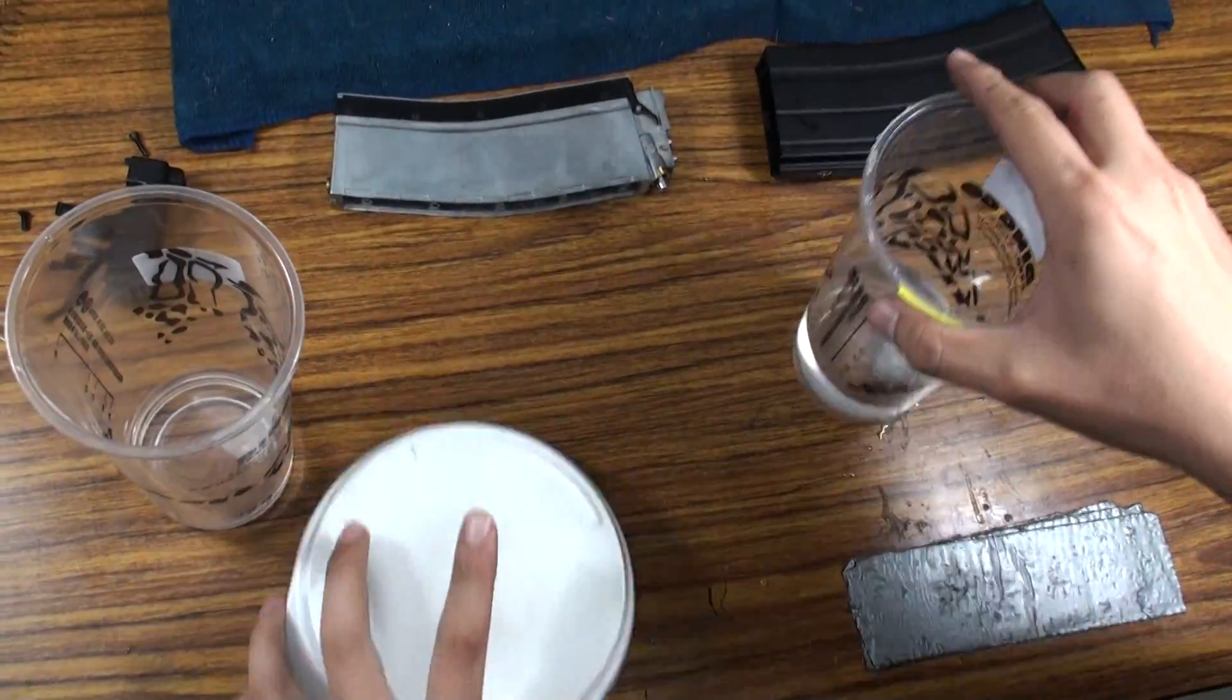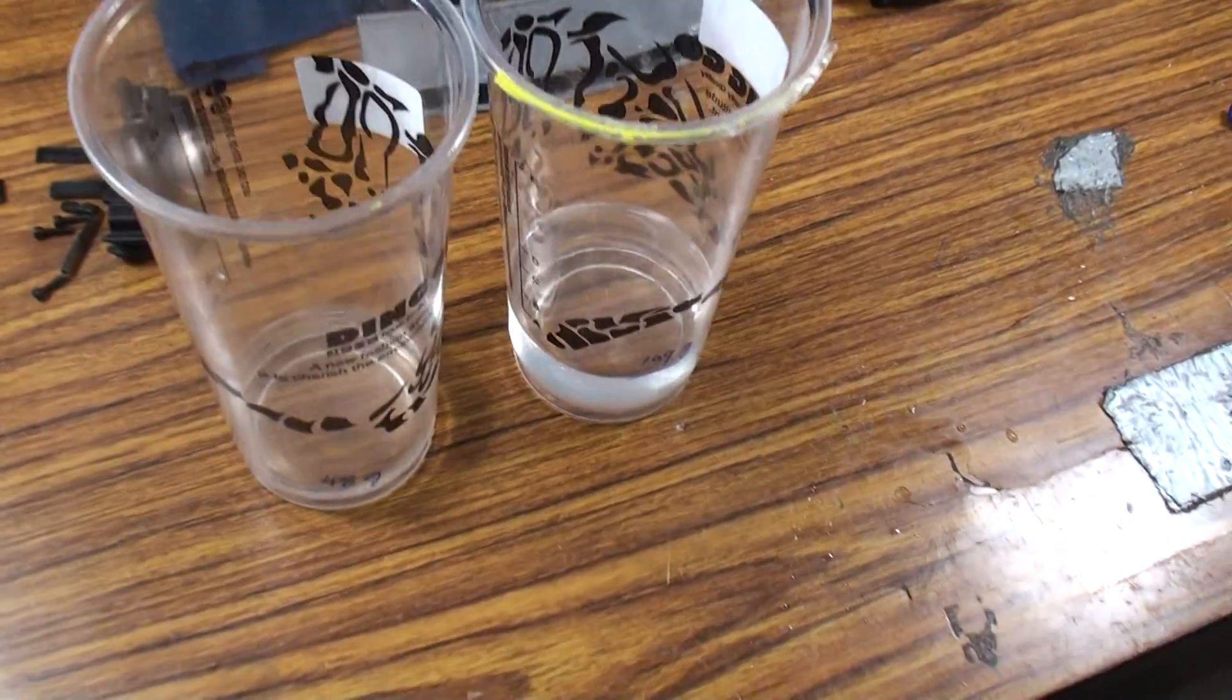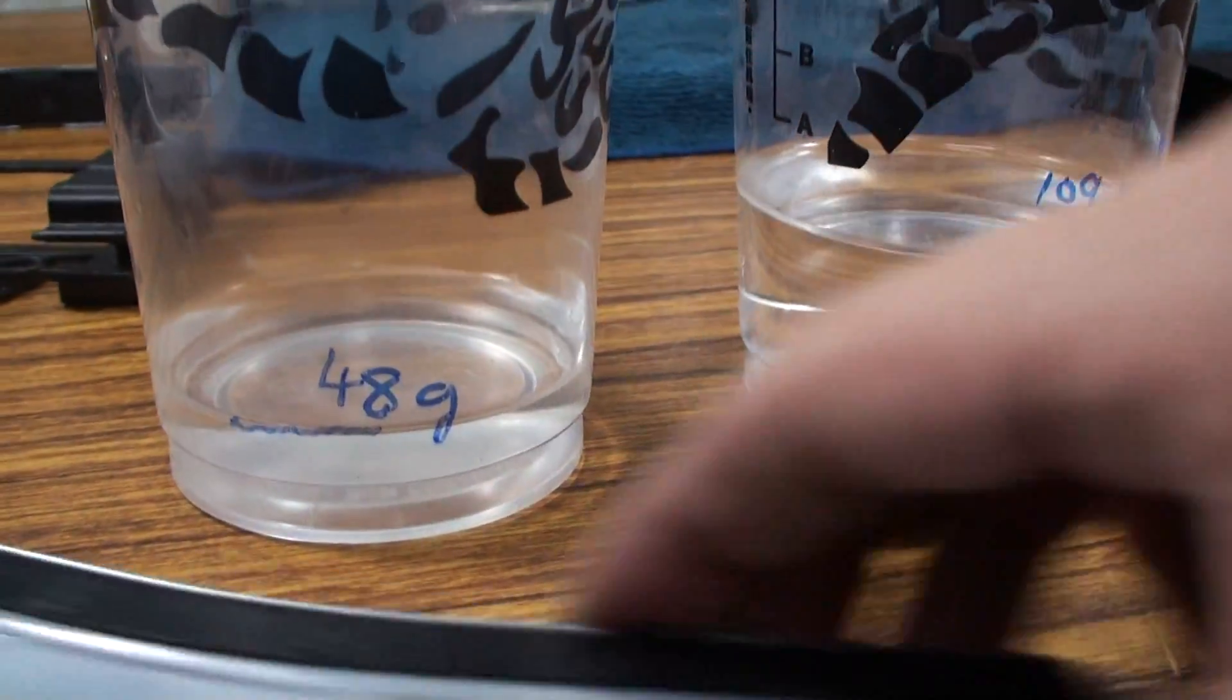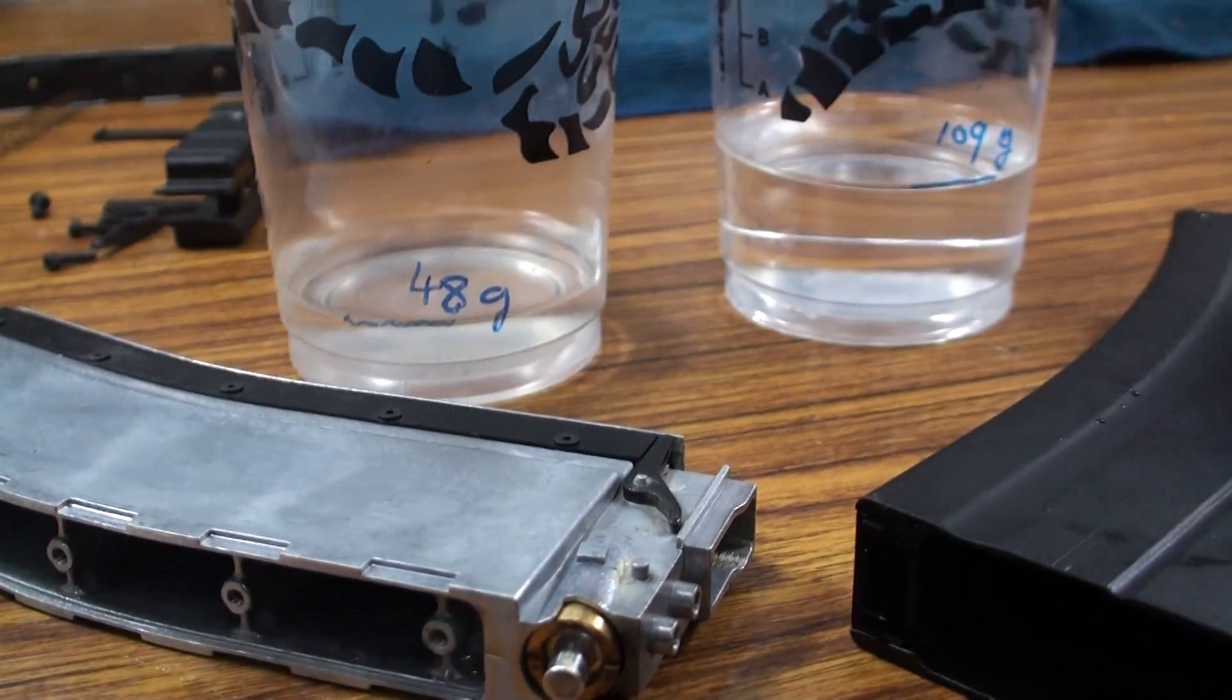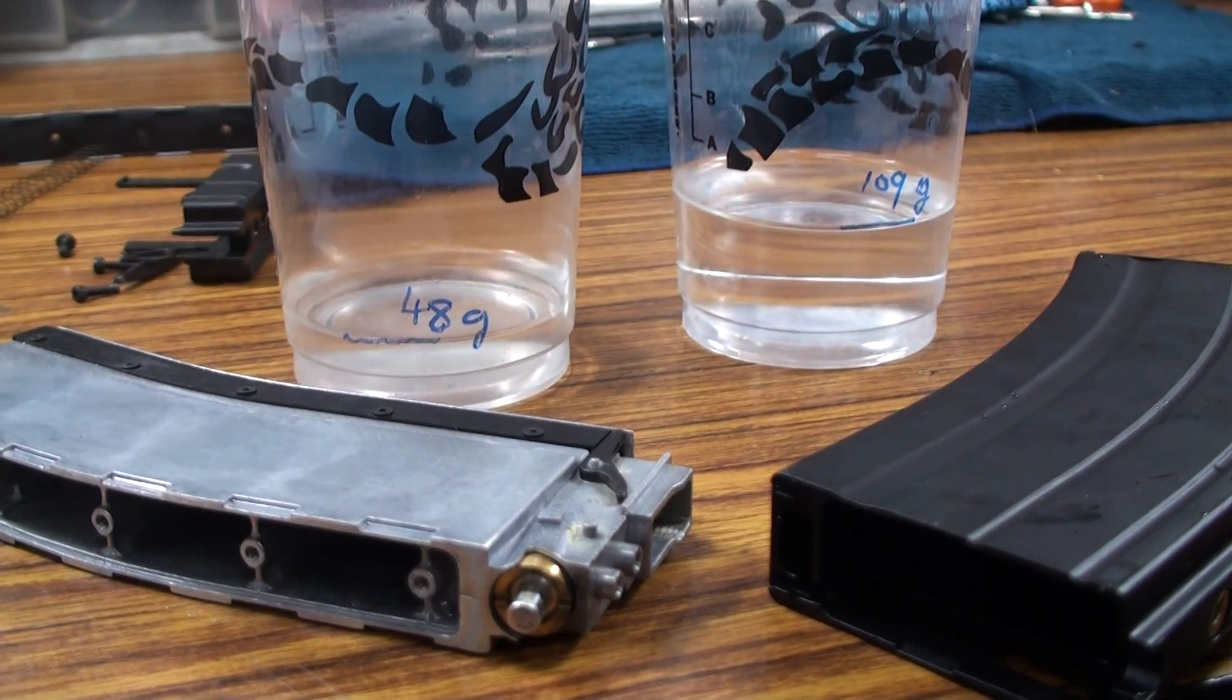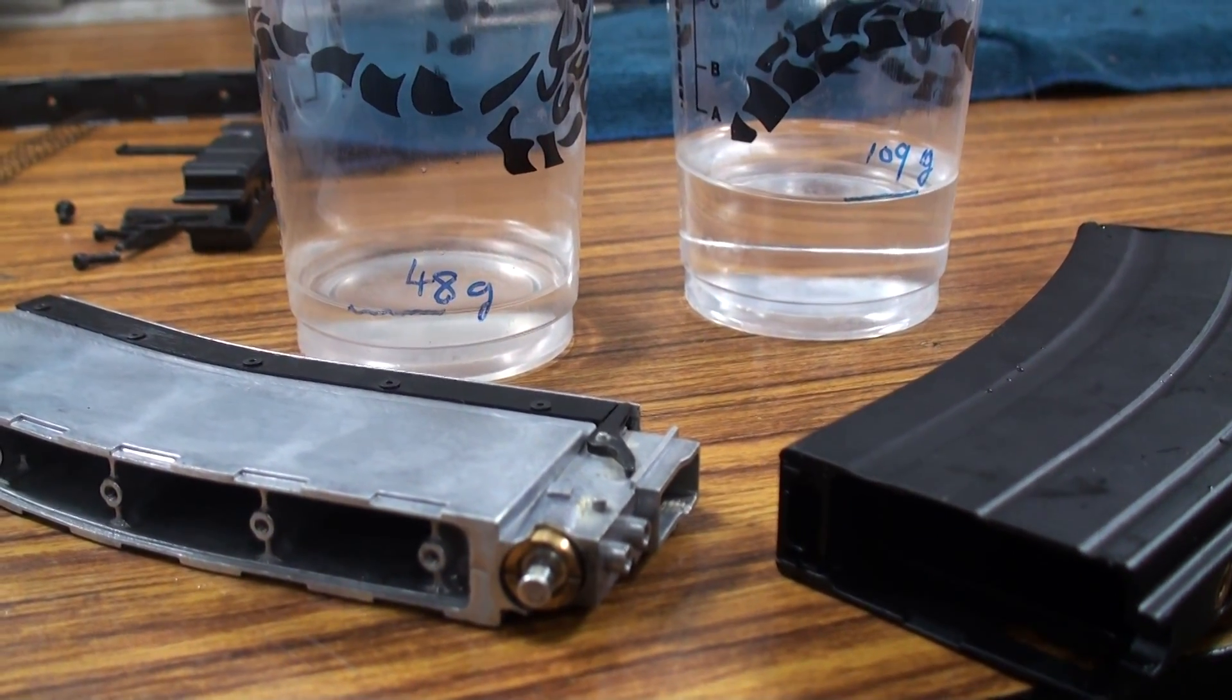Now let's put these two cups of water together and let me show you—you can see the big difference. This is the old version magazine with 48 grams of water, and this is the new version magazine with about 189 grams.